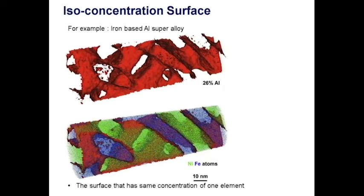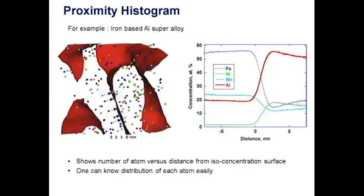If we want more quantitative and easier understanding of atomic distribution, then you can use proximity histogram. It shows concentration of elements versus distance from iso-concentration surface.